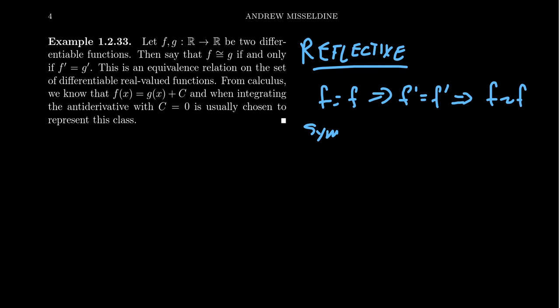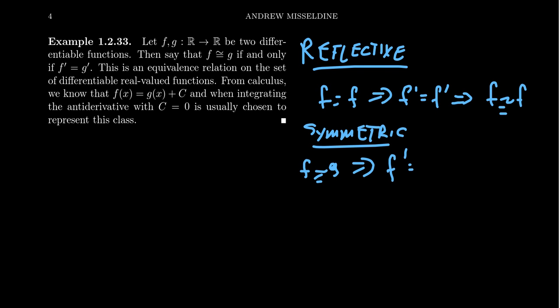Symmetric property: if F is related to G, that implies that F prime equals G prime, which implies that G prime equals F prime, which implies that G is related to F.